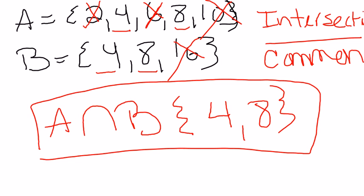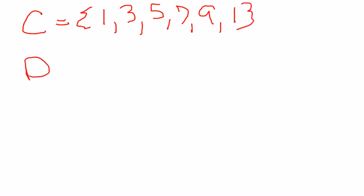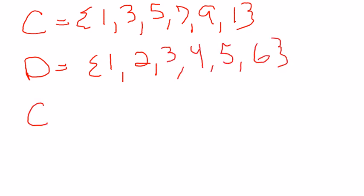So again let's do a couple more examples. We have C which was 1, 3, 5, 7, 9, and 1. As well as D which is 1, 2, 3, 4, 5, and then 6. And if I asked you for C intersection D.